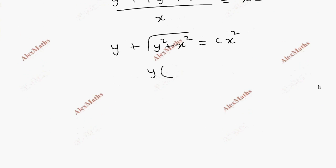y of 1 equals 0. When x equals 1, y equals 0. So 0 plus root of 0 squared plus 1 squared equals c times 1 squared. Root of 1, so c equals 1.